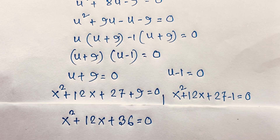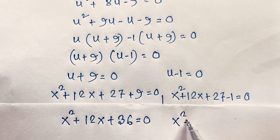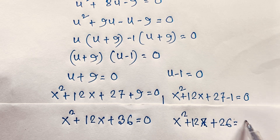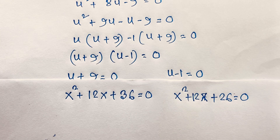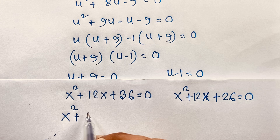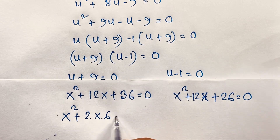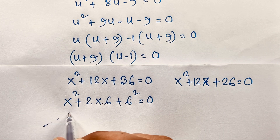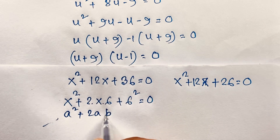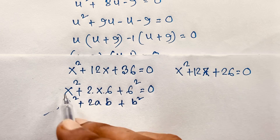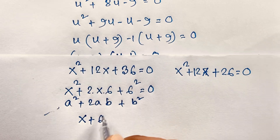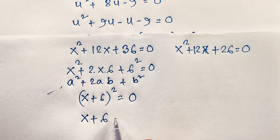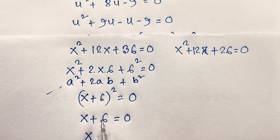For Case 2 (u − 1 = 0): x² + 12x + 27 − 1 = 0, giving x² + 12x + 26 = 0. Using the quadratic formula with a = 1, b = 12, c = 26: x = (−12 ± √(144 − 104)) / 2 = (−12 ± √40) / 2.